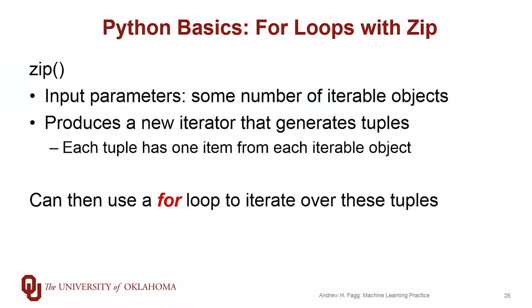Zip takes input parameters. Each parameter is an iterable object, so it could be explicitly a list or it could be an object itself, and what zip does is it produces a new iterator that then produces tuples containing one object from each of the original iterable objects. We can then use a for loop to iterate over those tuples.